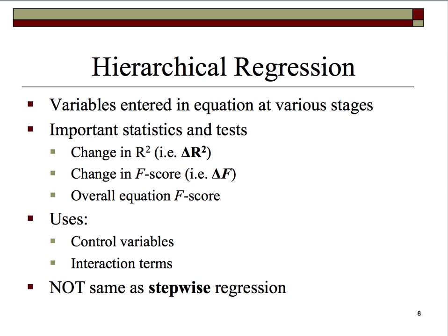The first key statistic is the change in R-squared, often denoted as delta R-squared, delta signifying change. This is the change in R-squared from block one to block two of variables. The additional incremental change in R-squared has an associated statistical test — the F-score — so we typically see this in the output as the change in F-score, or delta F.